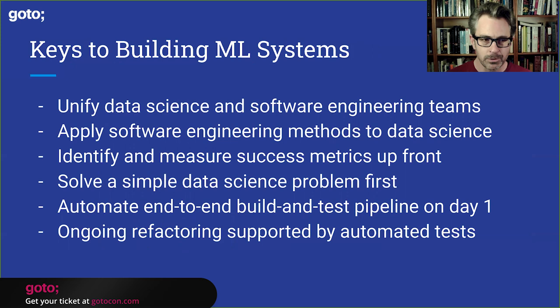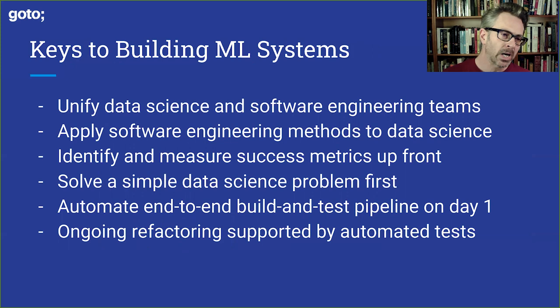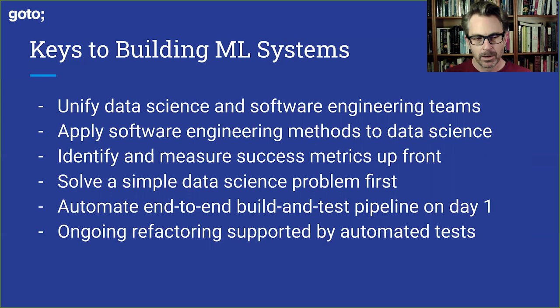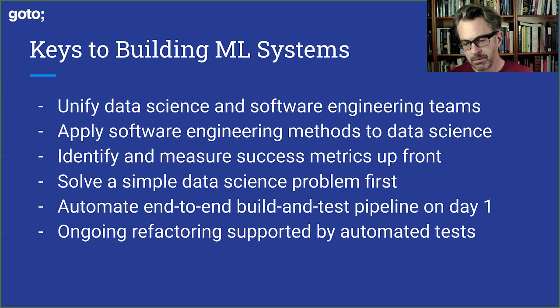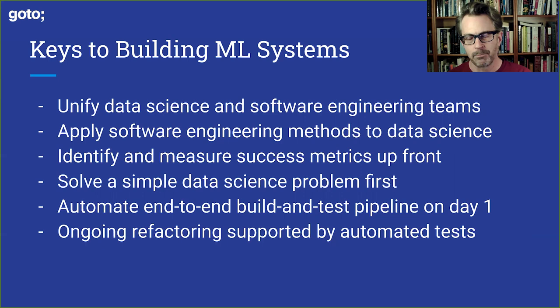To summarize, here are the keys: unify the data science and software engineering teams; apply software engineering methods to data science; identify and measure success metrics up front; solve a simple data science problem first and use that as a basis for improvement; automate the build and test pipeline on day one; and encourage and support ongoing refactoring supported by automated tests. What we're looking for is to apply our experience wisely and get the two sides of this coin to work together smartly.